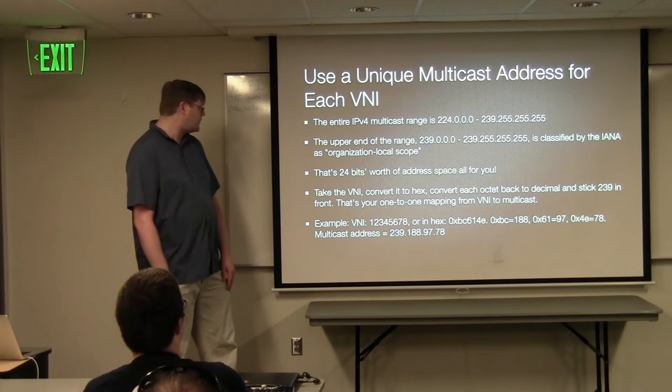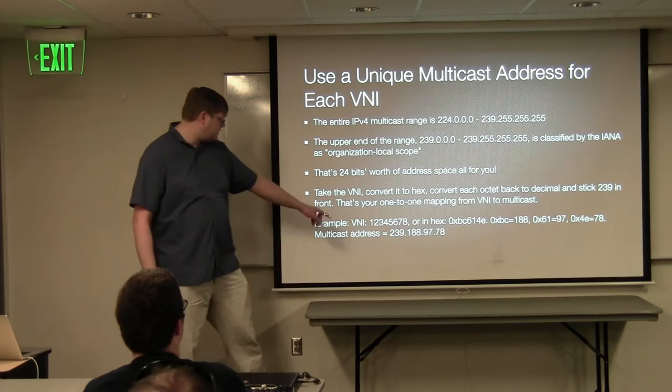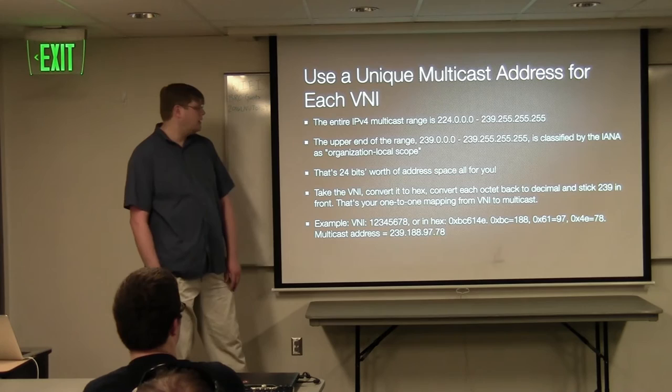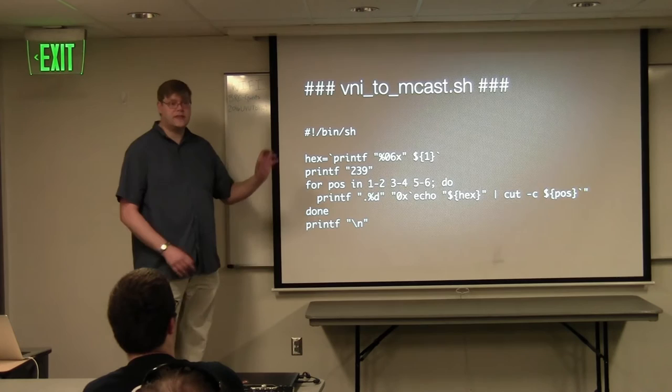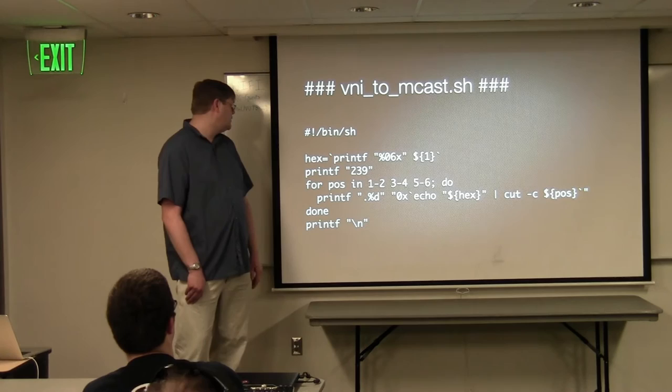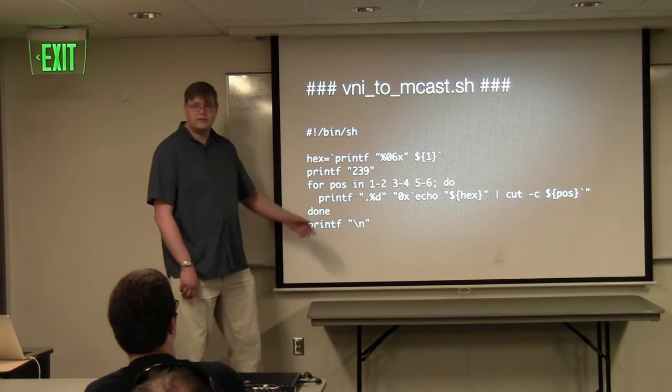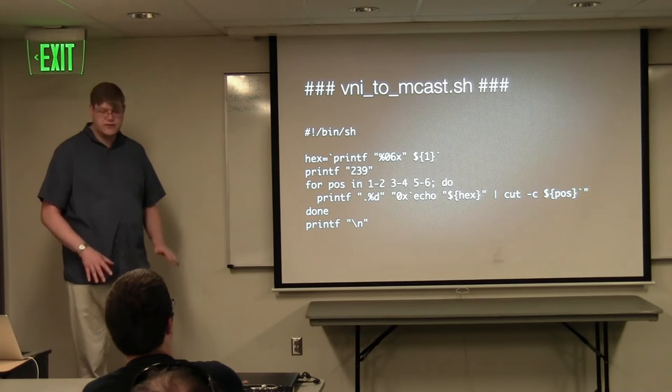A quick hex conversion: take your decimal VNI, turn it into hex, give yourself 6 digits, split each pair of digits back into decimal, stick 239 on the front, and that's your group address. One VNI, one group address, no redundant traffic on your multicast. For example, VNI 12345678 converts to hex and maps to multicast 239.52.91.88 or similar — you can work it out. Another tool can do this for you: give it your decimal VNI, it converts to hex, and produces a 239.x.x.x group address.